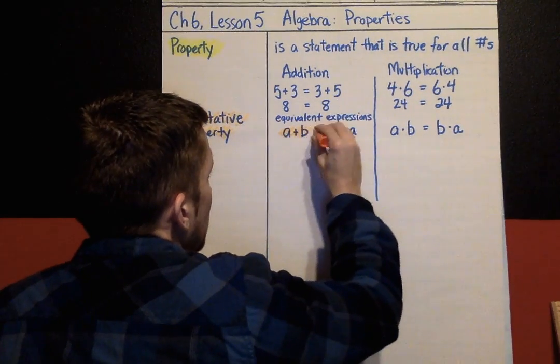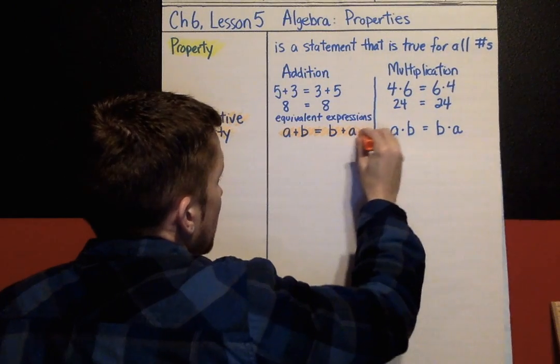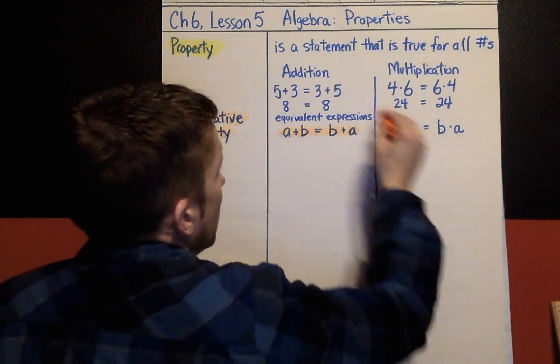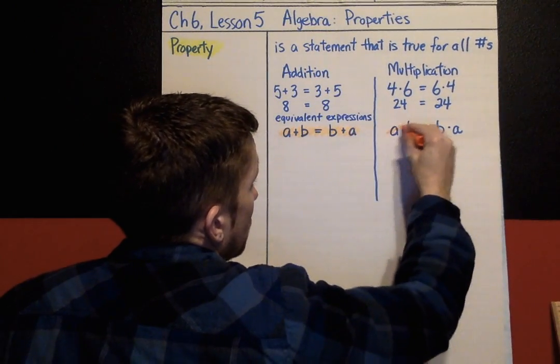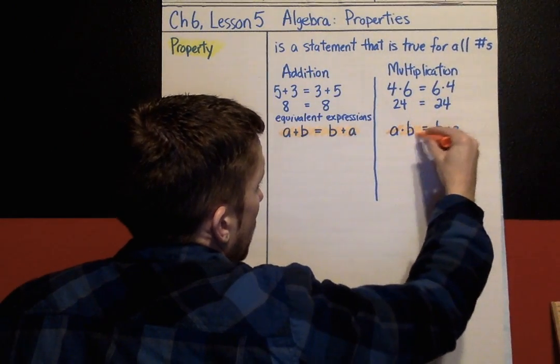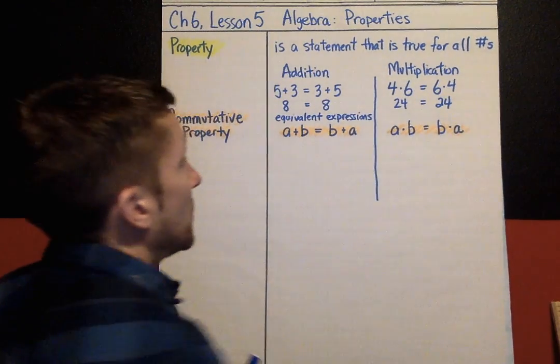Here is the commutative property of addition, and here is the commutative property of multiplication.